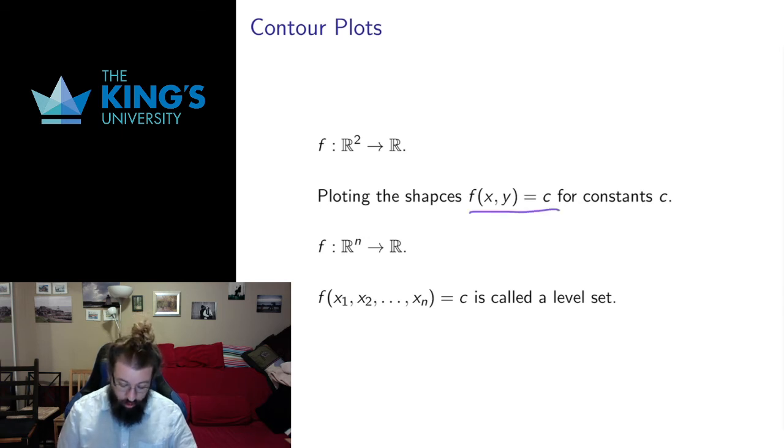We have another technique instead of drawing graphs because drawing 3D graphs is pretty difficult. Sometimes we'll just draw what happens when the value of the function is a constant and see what kind of shape we get there, and those are called contours. And for higher dimensions they're often called level sets. So these are places where the output of the function is constant.